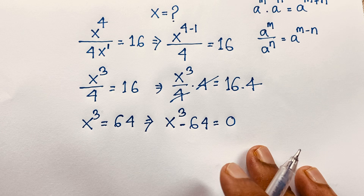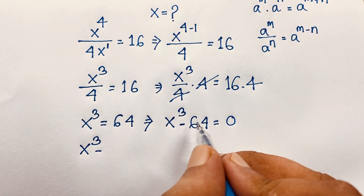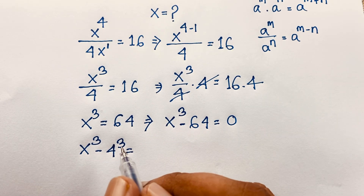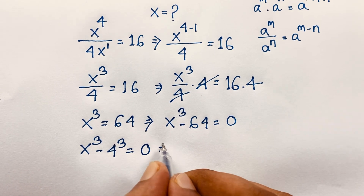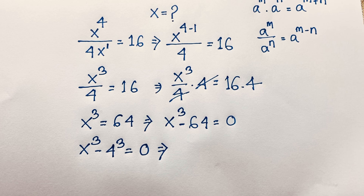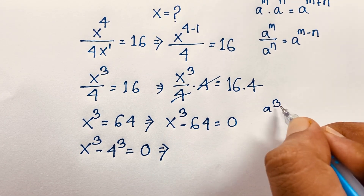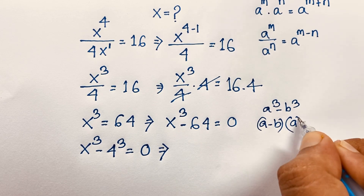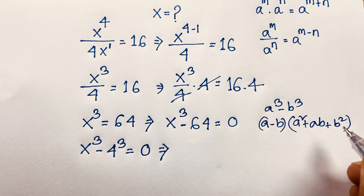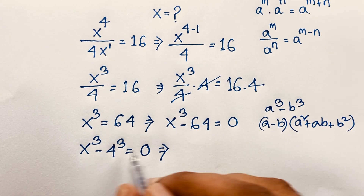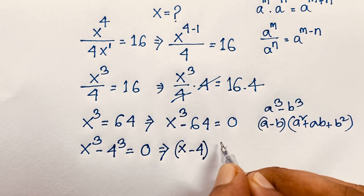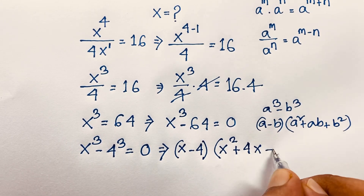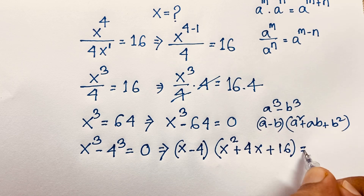Now we have x cubed minus 64. We know the difference of cubes formula: a cubed minus b cubed equals a minus b times a squared plus ab plus b squared. Applying this formula here, it will be x minus 4, times x squared plus 4 times x — which is 4x — plus 4 squared, which is 16, equals 0.